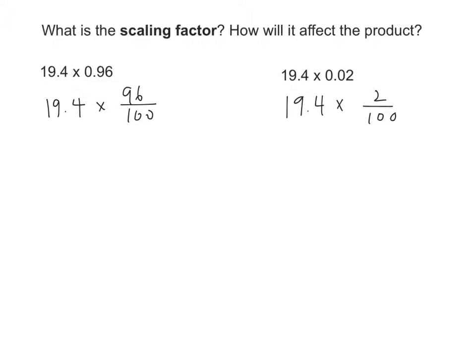Okay. So go ahead, and once you've written down the decimal form and the fraction form, to remind yourself that both are the same, go ahead and circle the scaling factor. The first scaling factor is 96 hundredths, isn't it? And the second scaling factor is 2 hundredths.